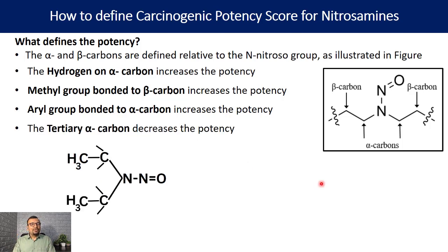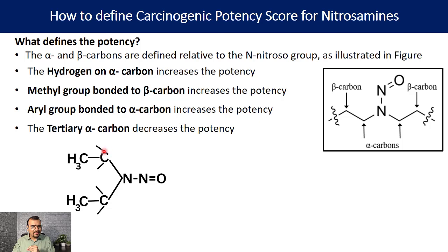Now let's understand which functional groups decrease carcinogenic potency. The first is the tertiary alpha carbon. If your nitrosamine compound has a tertiary alpha carbon — meaning three carbons are connected to that alpha carbon — the potency of the nitrosamine is reduced. The presence of this tertiary carbon at the alpha position decreases the potency.